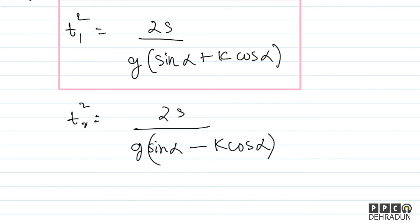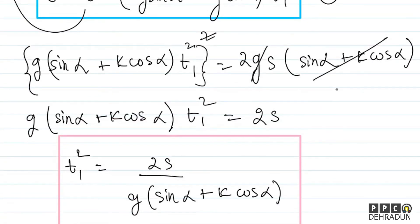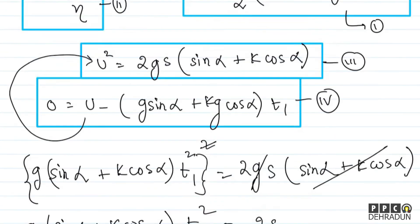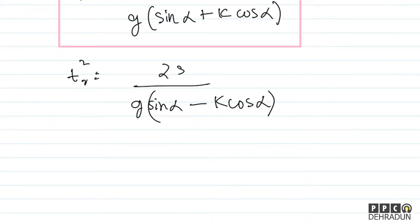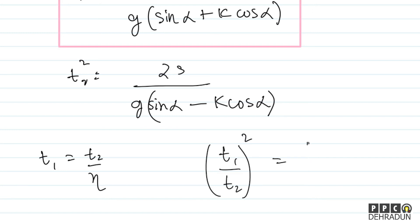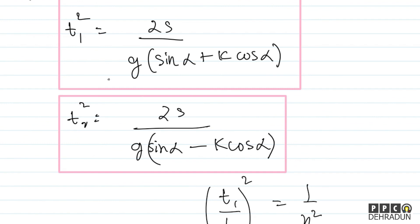If I want t1²/t2², I can use the relation t1 = t2/eta, so t1²/t2² = 1/eta². Using this with the expressions for t1² and t2².